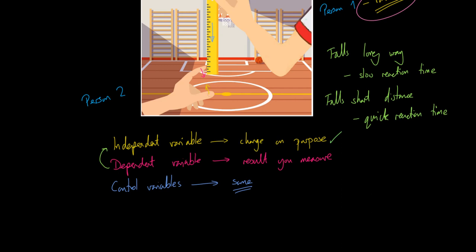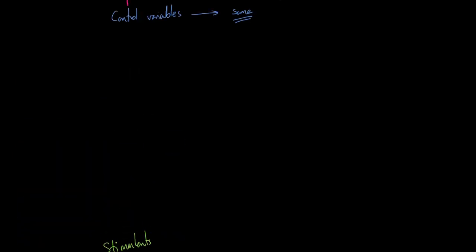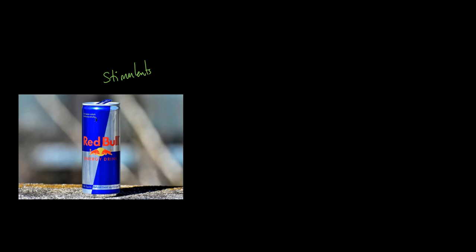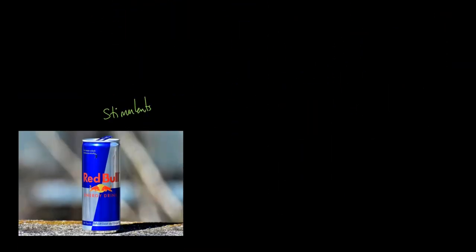There are different ways that you can approach this experiment, different ways you could do it. I've seen this done with stimulants like caffeine. What you do is you let a person do this ruler drop thing, and then you feed them something with caffeine in, and then you let them have another go.